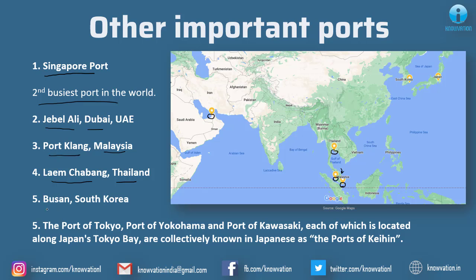Fifth is Busan in South Korea. Here you will see South Korean port Busan, which is just above Japan. Sixth are the ports of Tokyo, Yokohama, and Kawasaki, each of which is located along Japan's Tokyo Bay — collectively called the Ports of Keihin. Here you will find the port of Keihin.